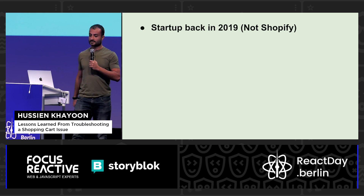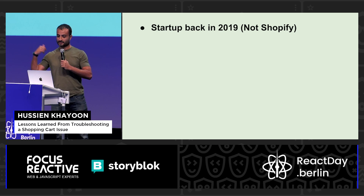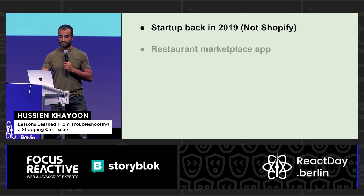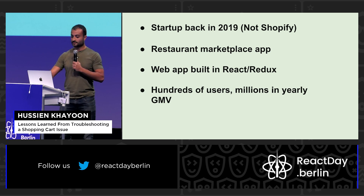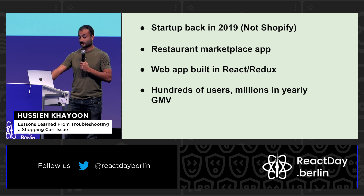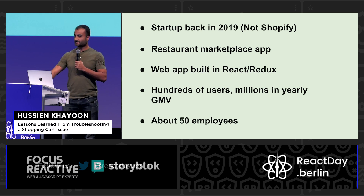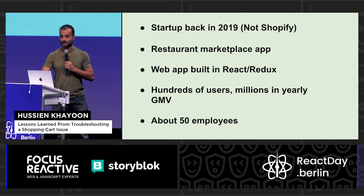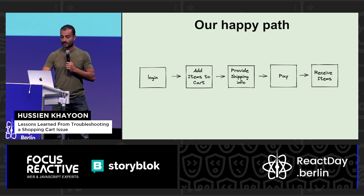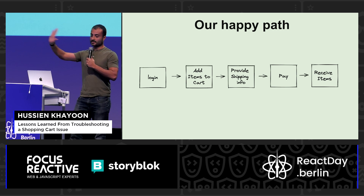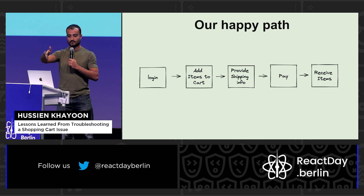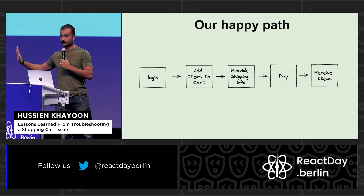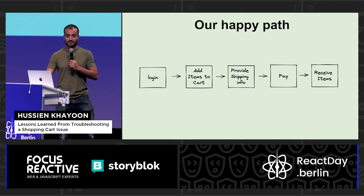A brief background about this bug: it wasn't at Shopify, it was at a startup I worked at before in 2019. It was a restaurant marketplace app built in React and Redux — hundreds of users, millions in GMV, about 50 employees with 10 to 15 in tech. There's a happy path to the app, pretty standard in e-commerce: you log in, add items to your cart, provide shipping info, pay, and receive your items.